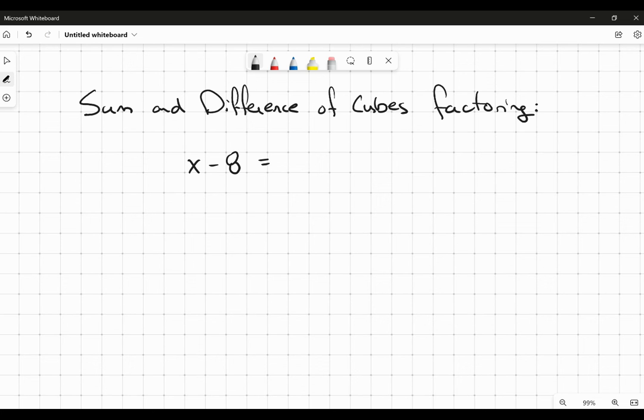So I know that 8 is a perfect cube. It's 2 cubed. And I've got two terms, so I've got a difference here. It could be a difference of cubes. But x by itself is not a perfect cube.